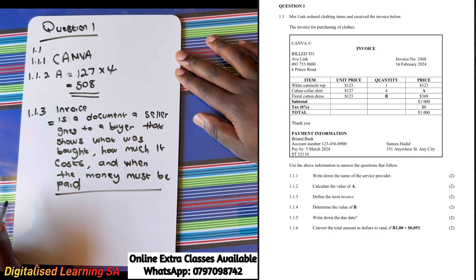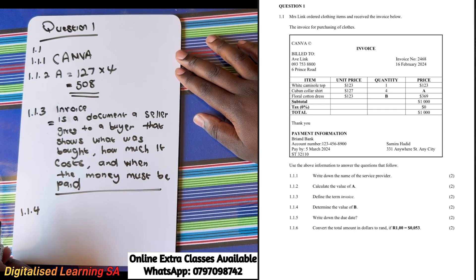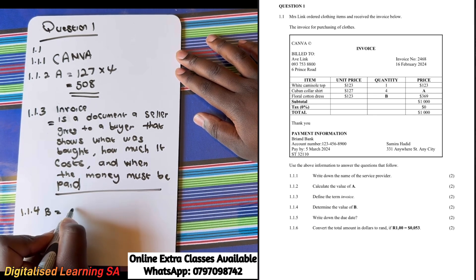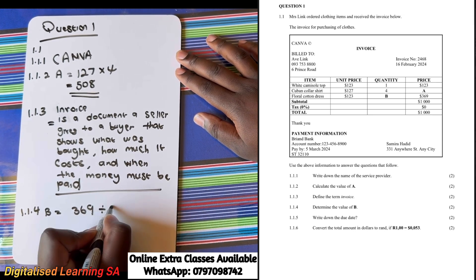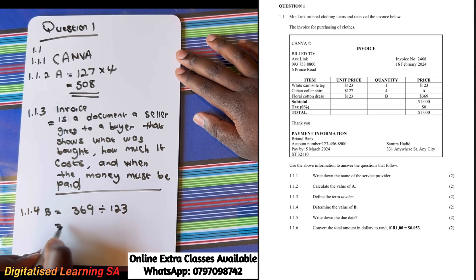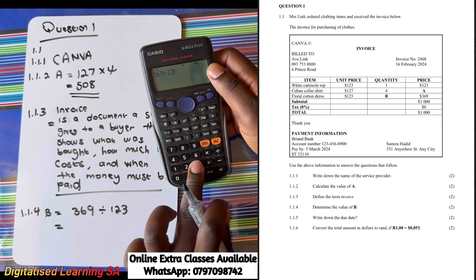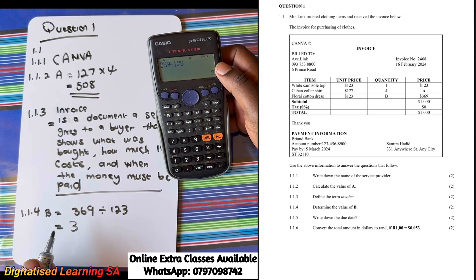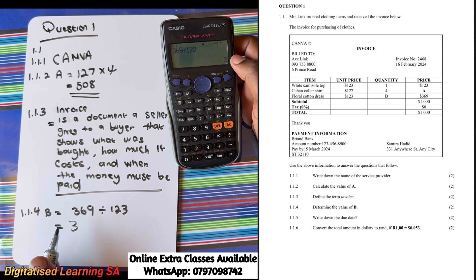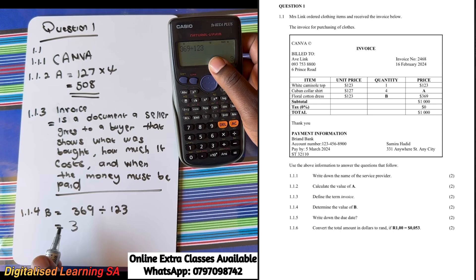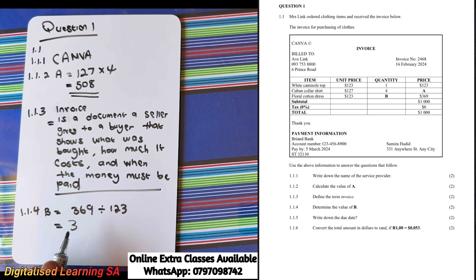We are done with question 1.1.3 and now move to question 1.1.4, which says: determine the value of B. To determine B, we take 369 divided by 123, and the answer is 3, meaning that if you take 123 and multiply by 3 it gives you 369, which is the price of the floral cotton dress.